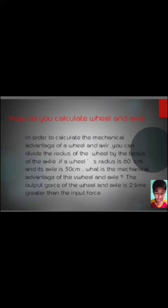If a wheel's radius is 60 cm and its axle is 30 cm, what is the mechanical advantage of the wheel and axle? The output force of the wheel and axle is 2 times greater than the input. To be continued.